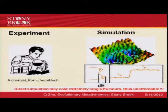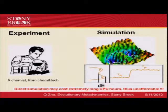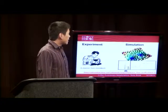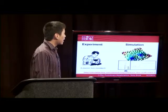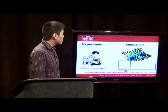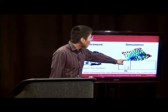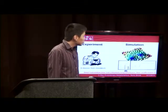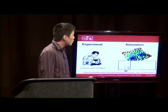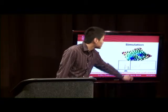Usually a successful experiment could lead to a discovery of new matter. From the point of view of computer simulation, the chemical or physical reaction could be viewed as jumping from one state of the initial sample to another state of the final product.